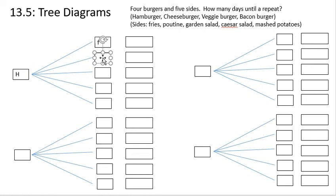So this is H for hamburger and there are five different sides. One is fries. One is poutine. One is a garden salad. One is a Caesar salad. And one is mashed potatoes. So I just labeled my first branch of the tree.